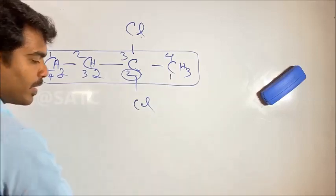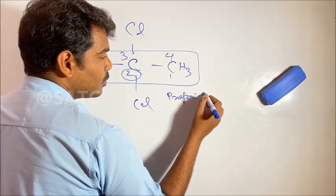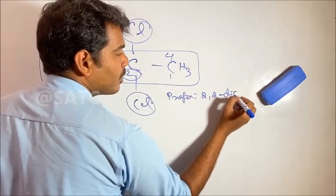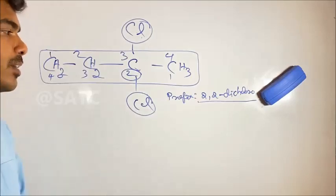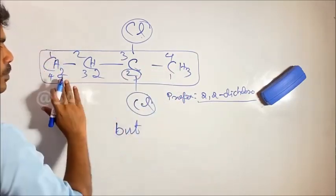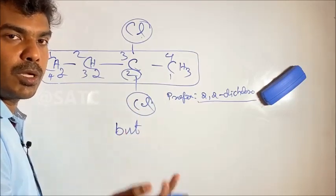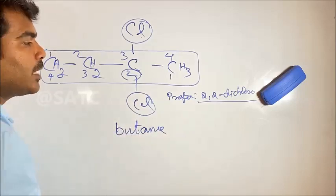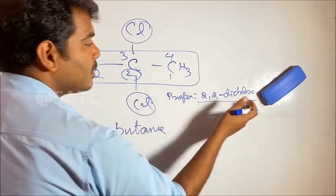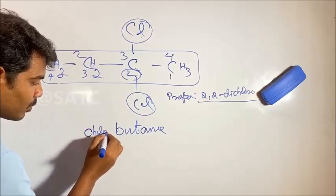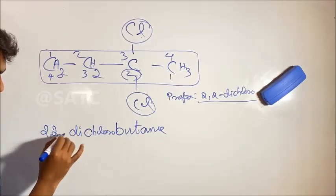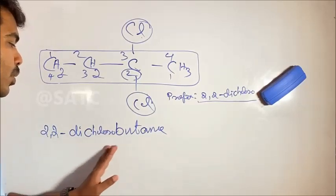So the position is 2, 2. We add the prefix: 2, 2-dichloro, because there are 2 Chlorine atoms. The word root is 4 carbons, which is 'but'. The primary suffix is single bond, so it is 'ane'. Therefore the name is 2,2-dichlorobutane.